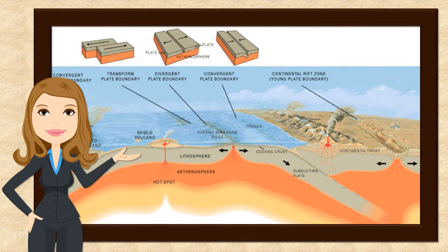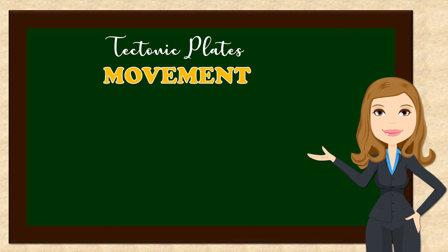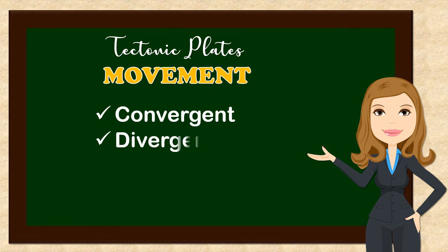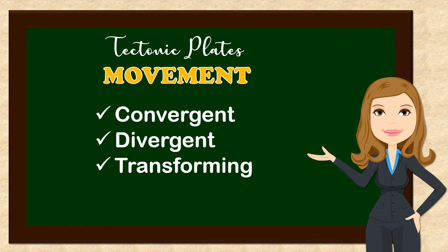Previously discussed are the different tectonic plate boundaries: the convergent plate boundary, the divergent plate boundary, and the transform plate boundary. Based on the concepts of boundaries previously discussed, here are the simple terms used to describe the tectonic plate's movement. First is convergent movement, associated with the process of plate convergence. Next is divergent movement, associated with the process of plate divergence. Last is transforming movement, associated with the process called transform plate.